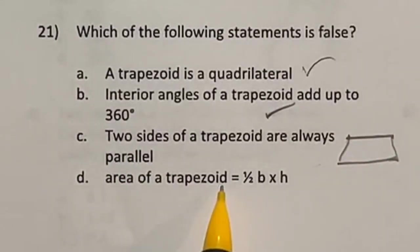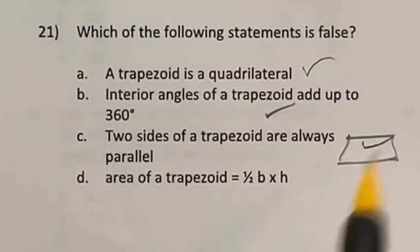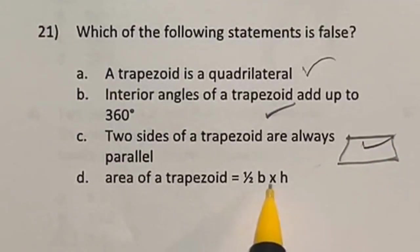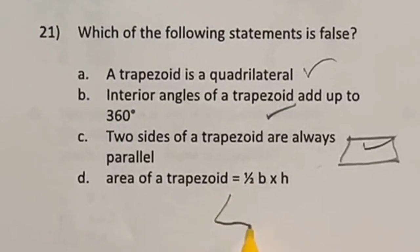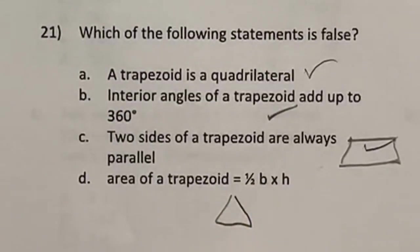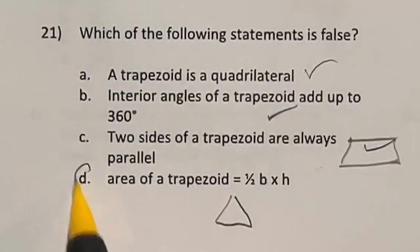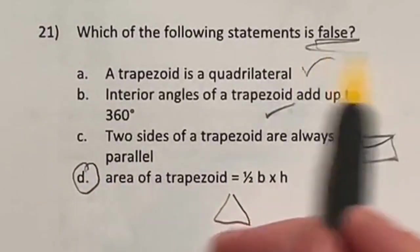And then in this case, area of a trapezoid, this is our only one left, so that can't be correct. But let's check this. One half base times height is the area of a trapezoid. No, half the base times the height is a very important area formula, but that's the area of a triangle. So we're going to go ahead and say that D is going to be our answer. This is the one that is false.